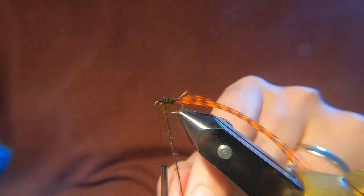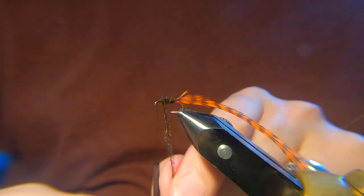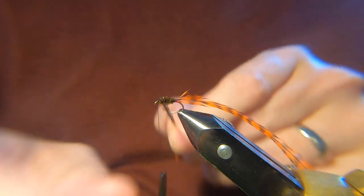It's the kind of fly that you don't really need to worry about the hook that you're using too much in terms of the weight of the hook. You can use a thicker wire hook and it'll still float fine.